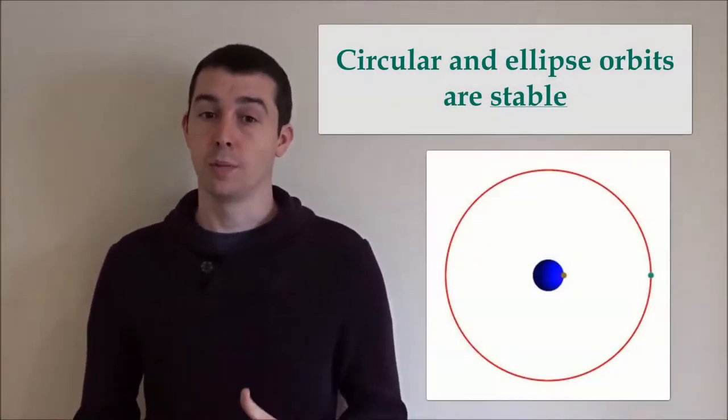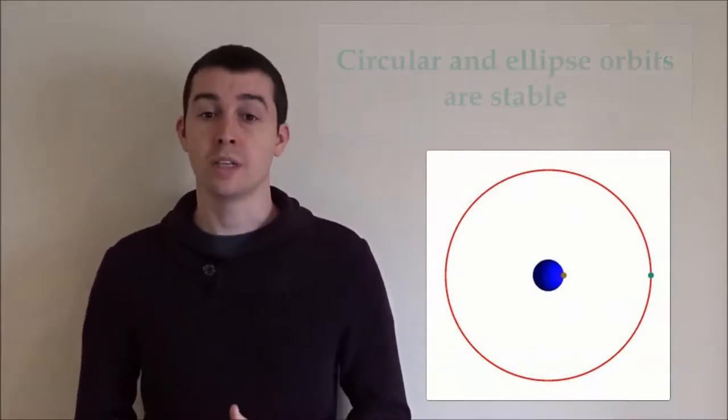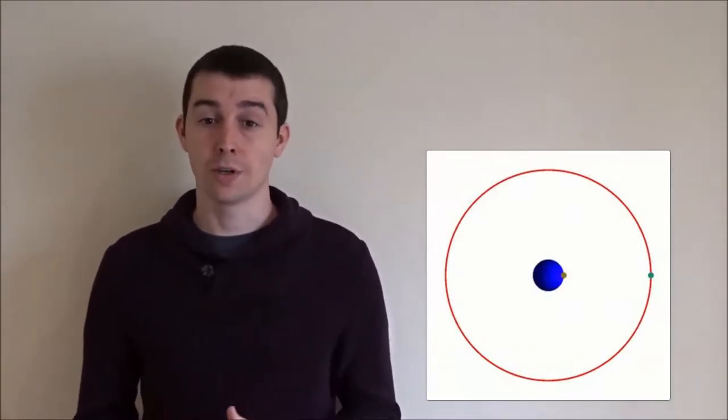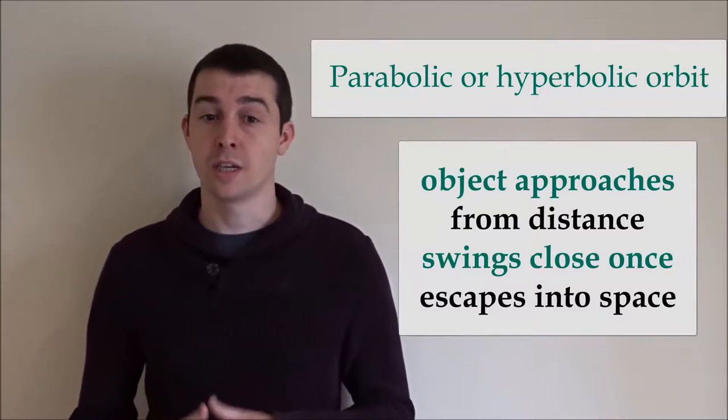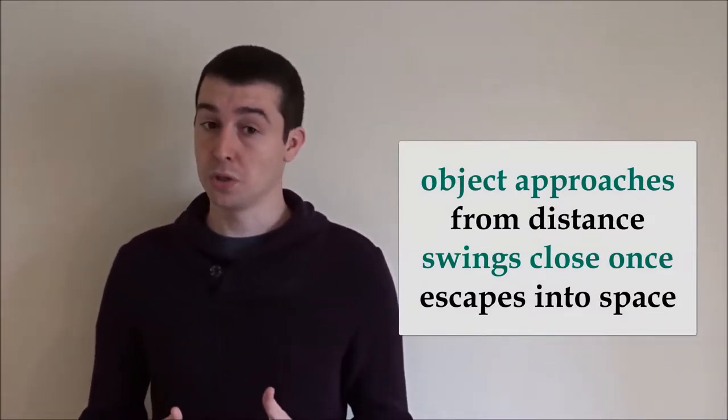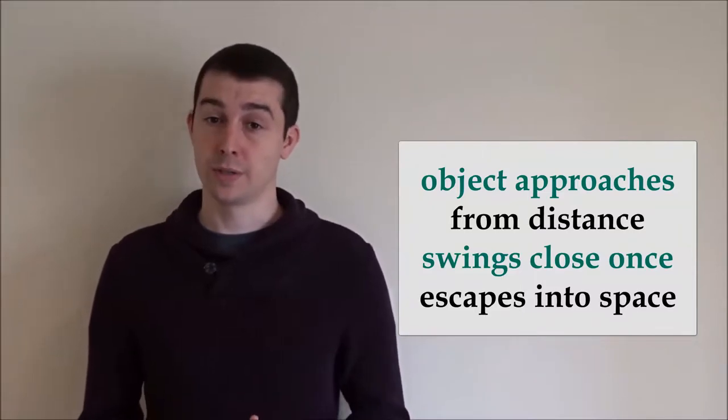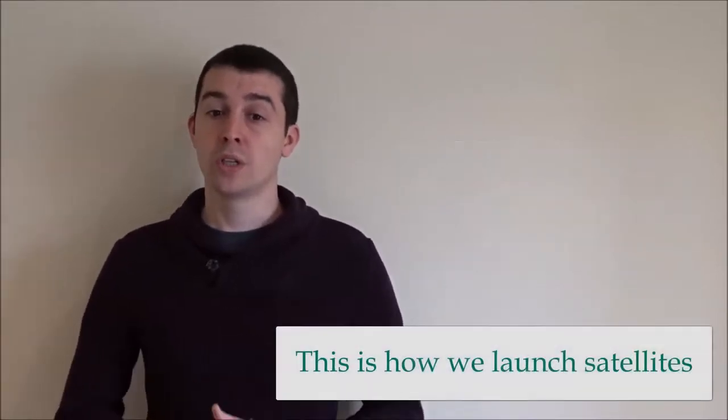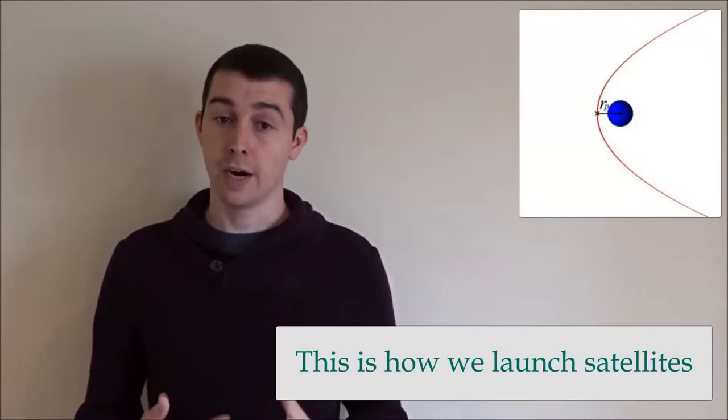Circular and ellipse orbits are stable, which means that the object continues in a stable orbit around the gravitational body. In a parabolic or hyperbolic orbit however, an object approaches a central gravitational body from a distance, swings close just once, and escapes out into space. We can use this type of orbit to launch satellites far into space.